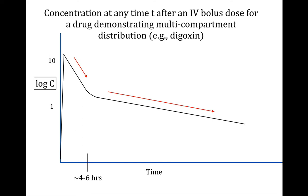After distribution is complete, you get to the portion of the curve that is elimination only, where there is equilibrium going in and out of the compartments. The important part to note with digoxin is that the effect curve shows that higher concentrations early on really don't impact the effect of the drug very much until distribution is complete.